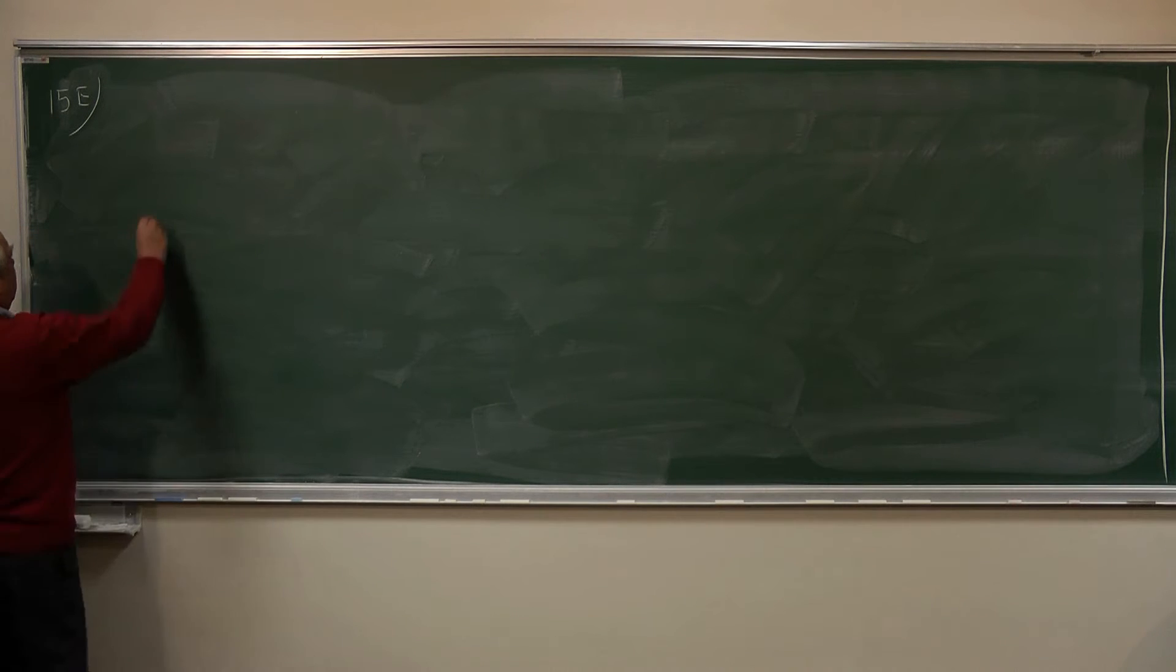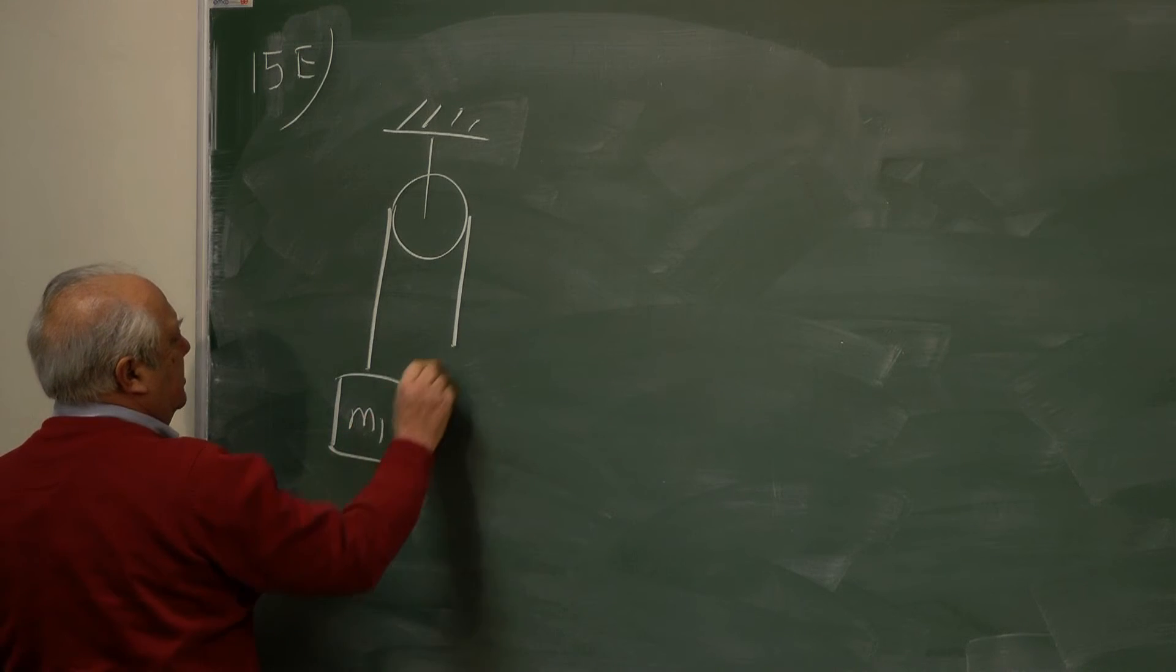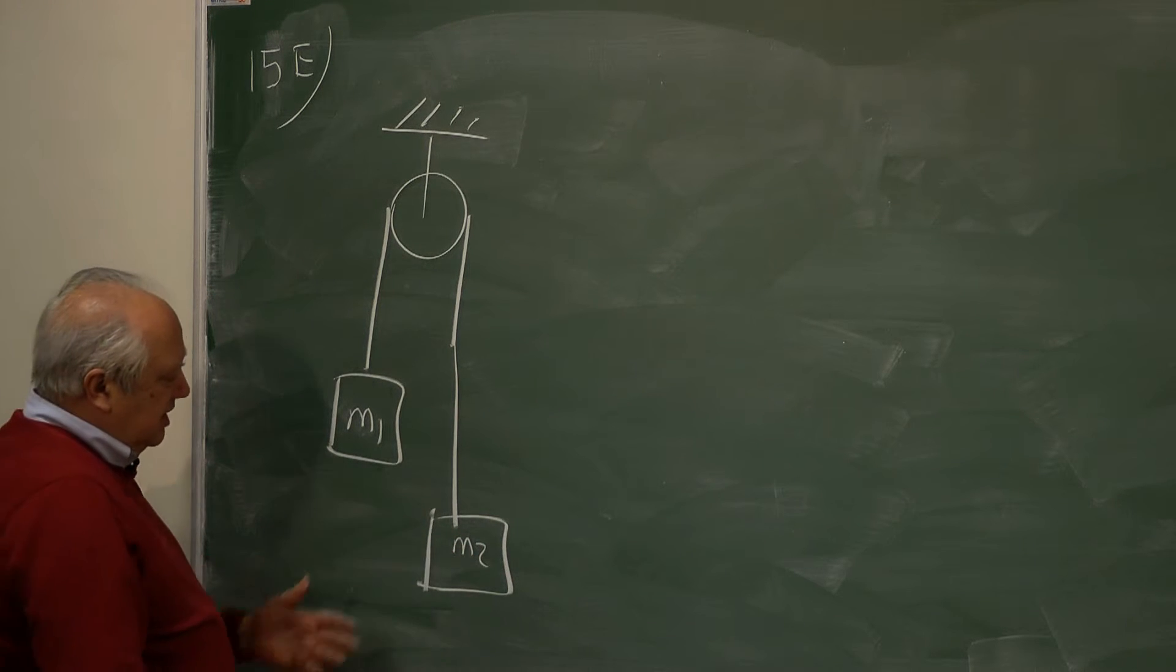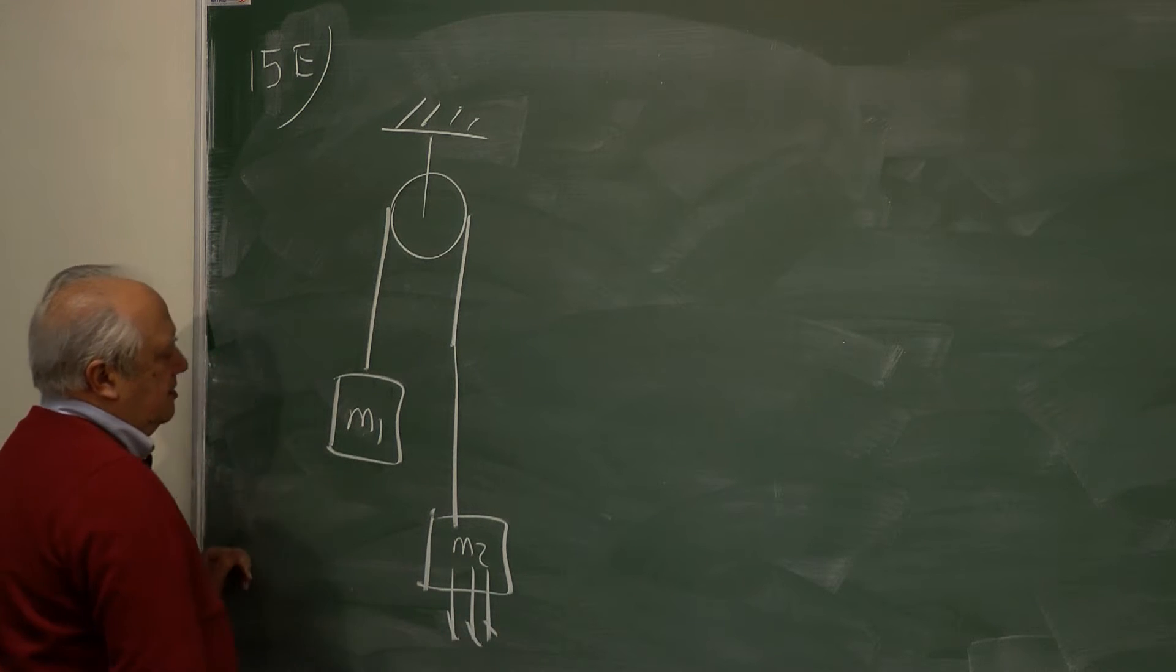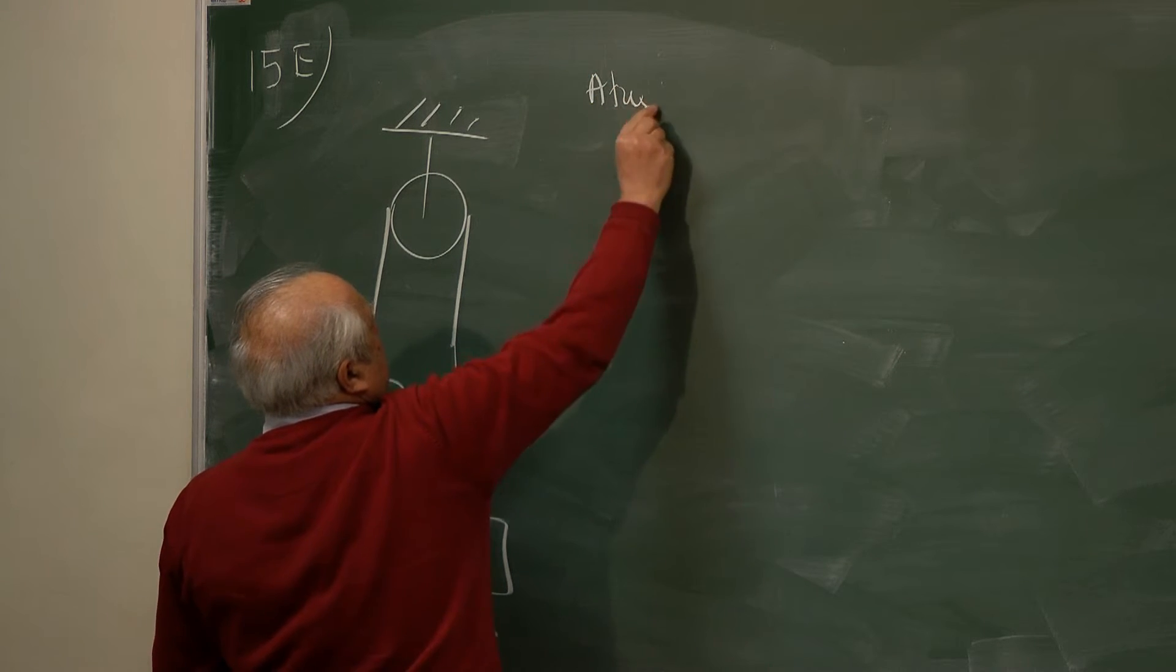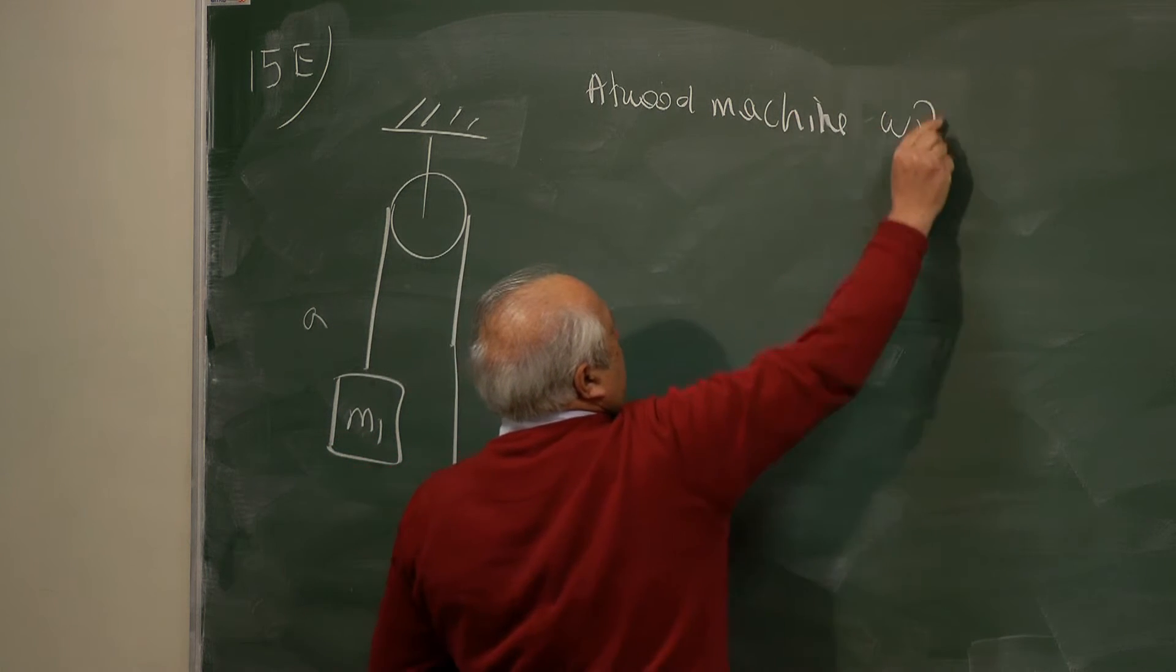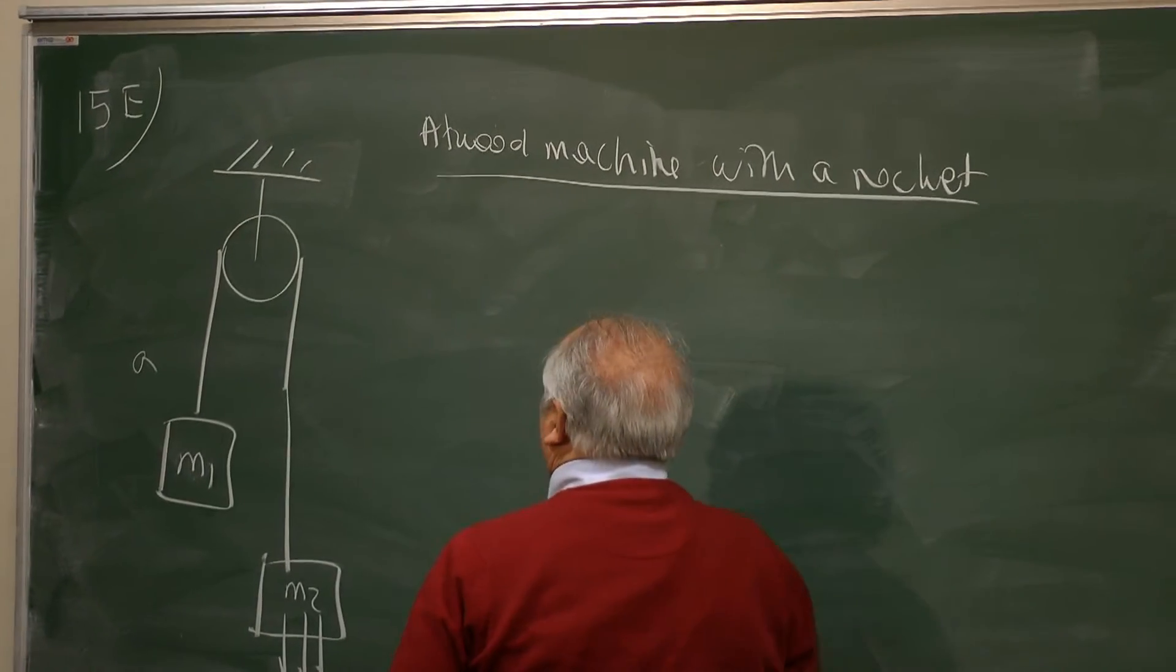The problem we will solve now is this. Consider an Atwood machine. Here we have a mass M1. Here there is a mass M2. And there is an internal mechanism that ejects mass. It's like a rocket. And the problem is to find the acceleration. So if I have to give a name to this problem: Atwood machine with a rocket or rocket empowered Atwood machine.